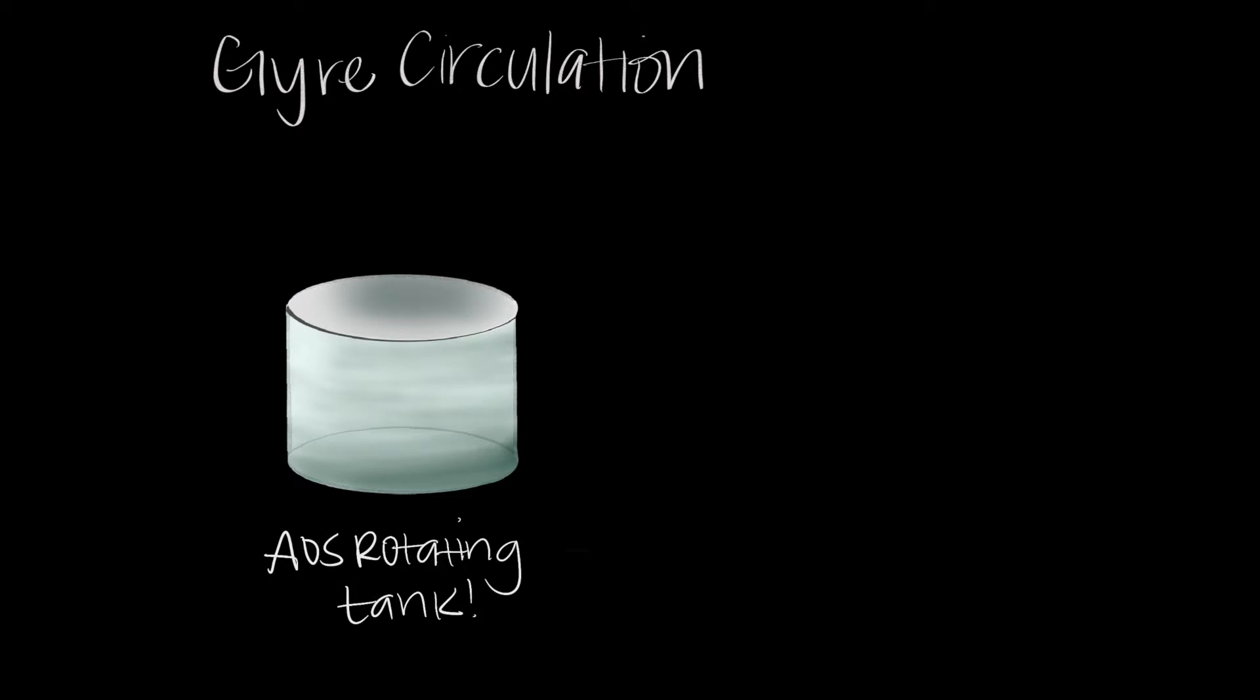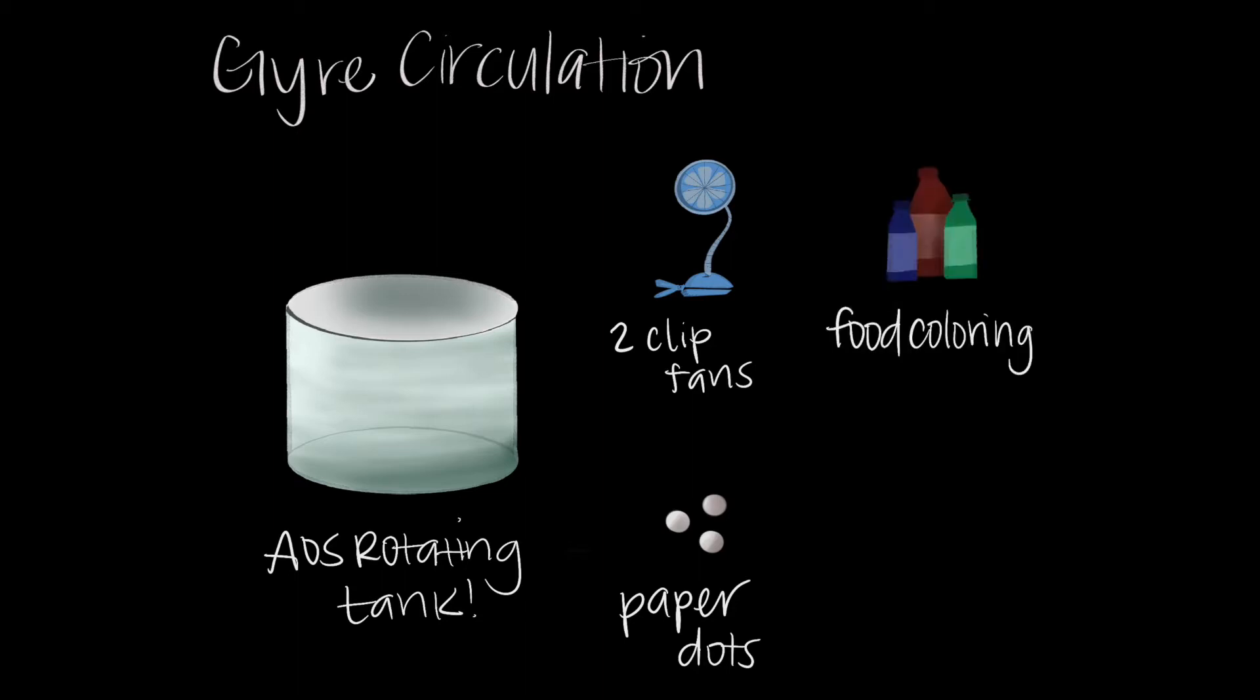Along with the tank, we use a set of paper dots which help visualize the surface flow. Two clip fans are attached to each side of the tank to mimic the atmospheric circulation above the gyre. We add food coloring to the tank to visualize the interior flow and have some pipettes to make distribution a little bit easier.